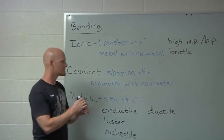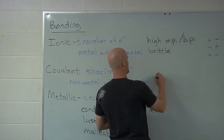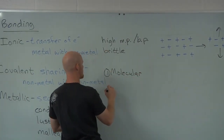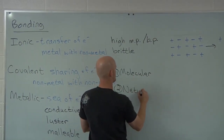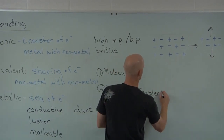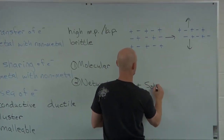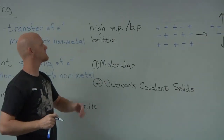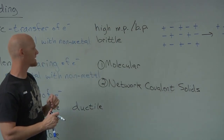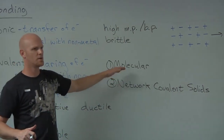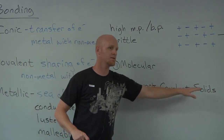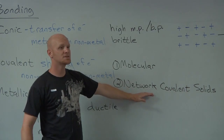Now, covalent compounds — we've got two types. Molecular is by far the most common. And the other type we call network covalent solids. We typically think of ionic compounds as forming crystals, whereas most covalent compounds — the molecular ones — we don't usually think of those as big crystals at room temperature. But network covalent solids, which are covalent compounds, do exist as crystals.